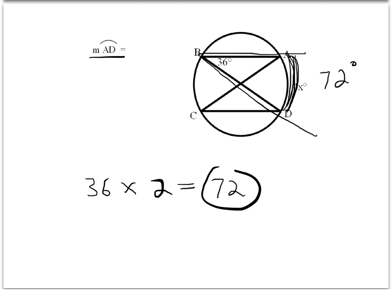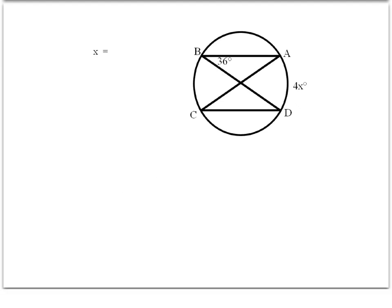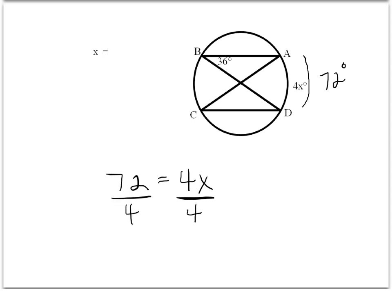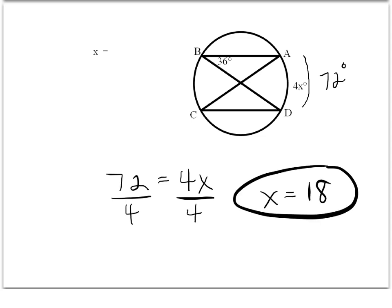That leads us right into the next problem: since we know the intercepted arc AD is 72 degrees, we can set that equal to the 4x term and solve for x. So we put in the values we know, and x equals 18.